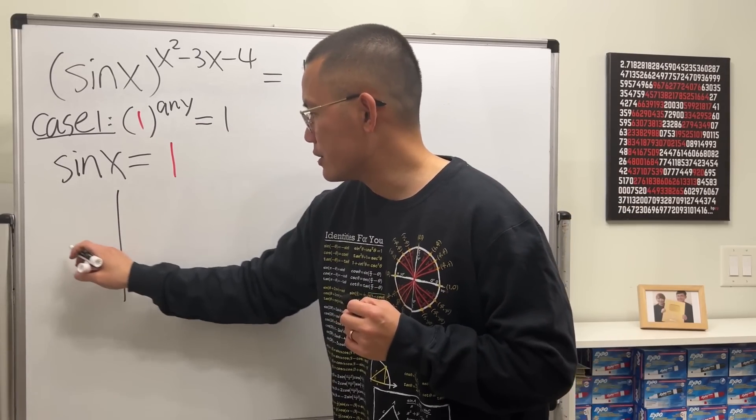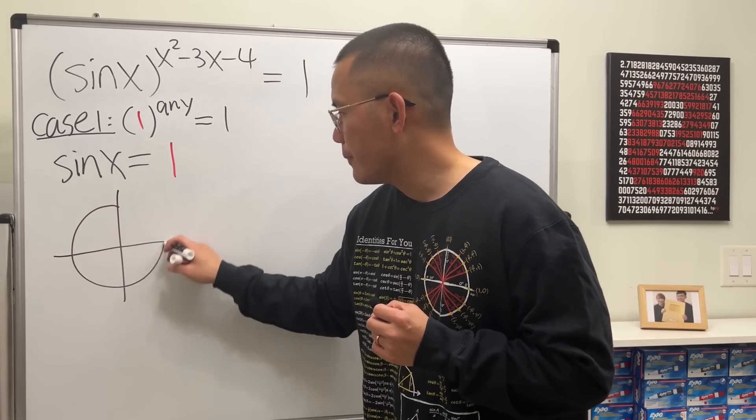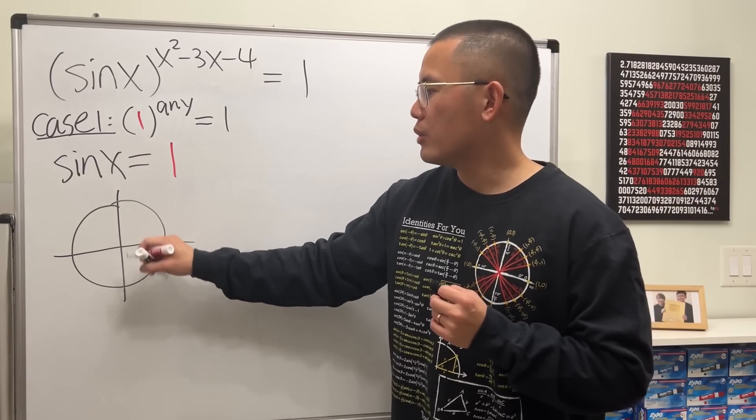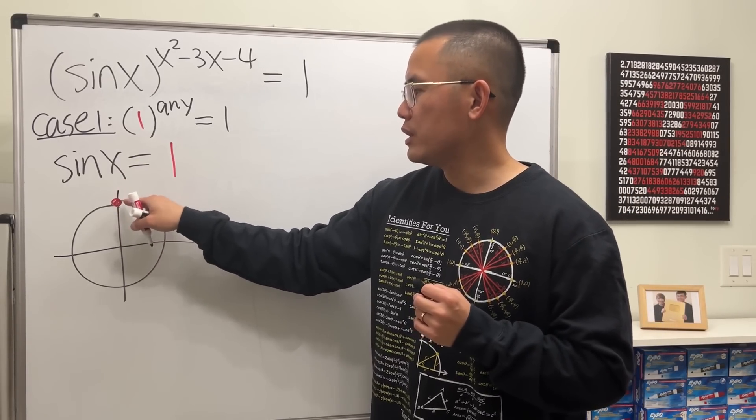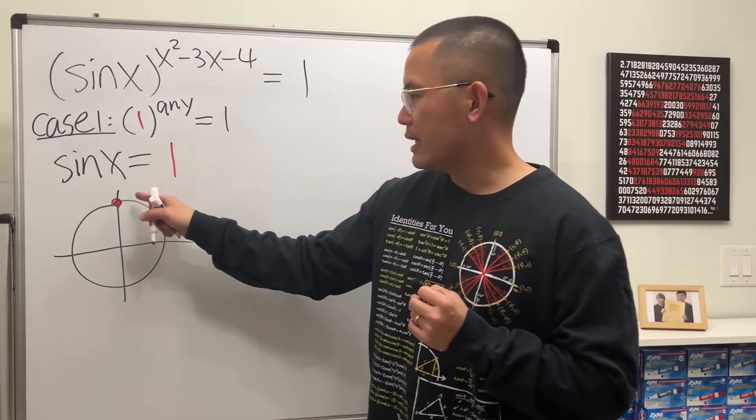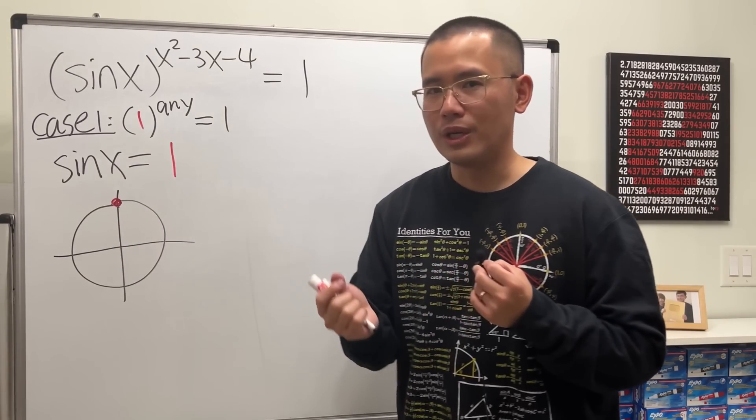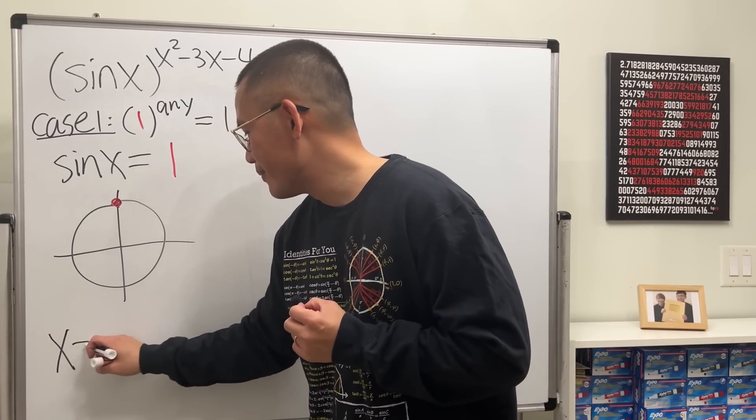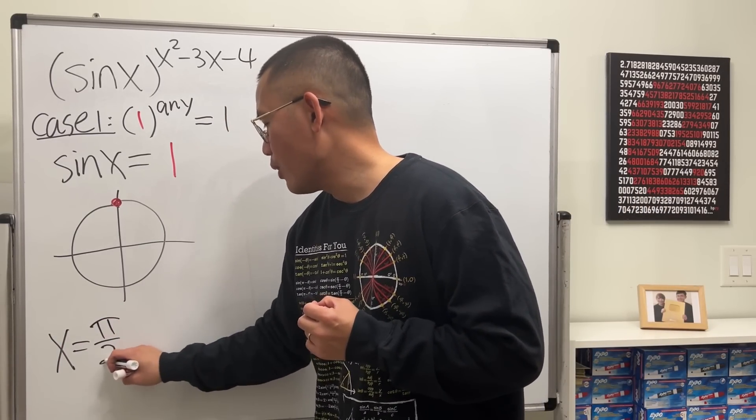We will have to make sure this is equal to 1. And now let's take a look at the unit circle. Sin is the y value on the unit circle and equals 1 only right here. And that angle is 90 degrees. But since we are all adults now, we use radians, which is π over 2. So x equals π over 2.